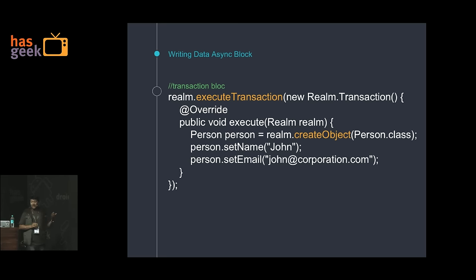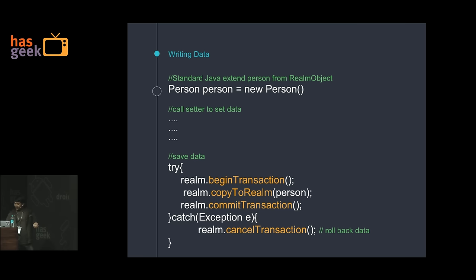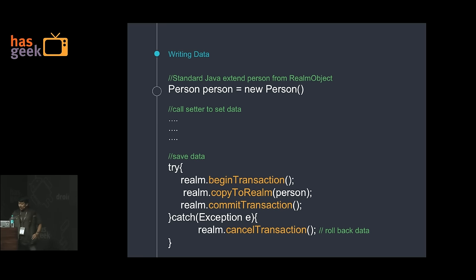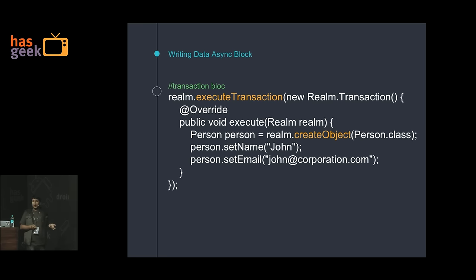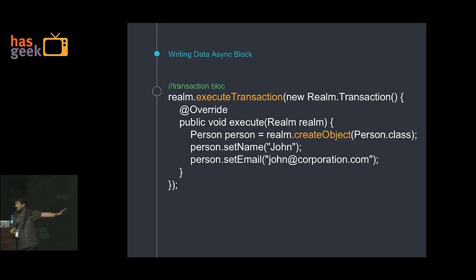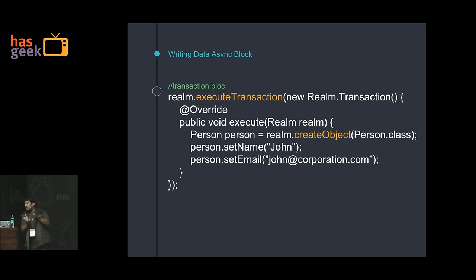If something happens you have to catch the exception and cancel the transaction on your own. But to avoid that boilerplate, Realm gives you an executeTransaction() block — just call your setters inside it and it will take care of committing and, in case of any exception, cancelling the transaction. This reduces your work of manually handling the cancellation as well.